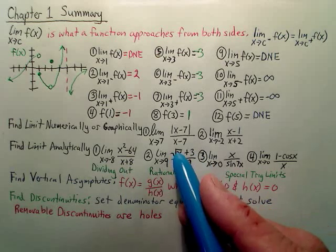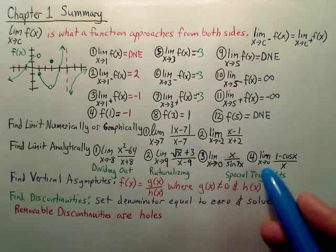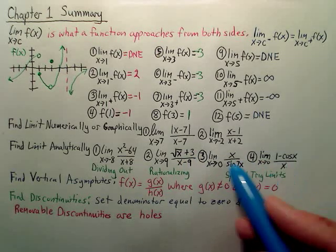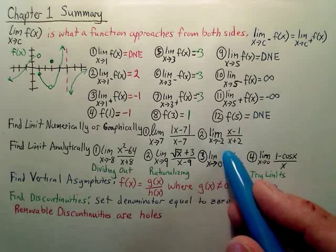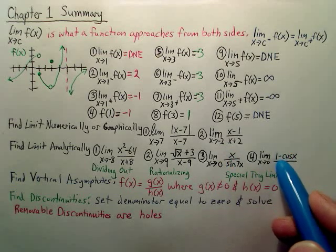Rationalizing means you multiply top and bottom on this one by the square root x minus 3. And these are just the simple trig functions. For this one, you multiply top and bottom by 7. It's the trig function one. And this one's just ready to go, the answer is 0.